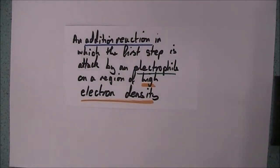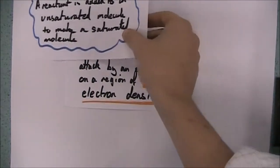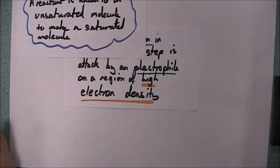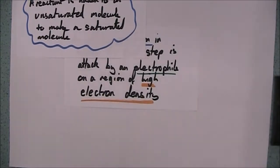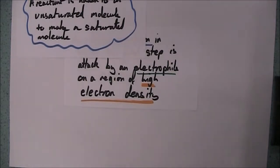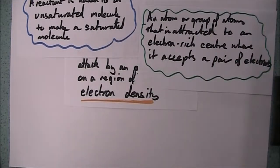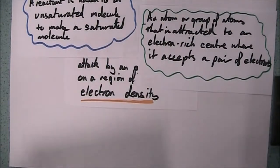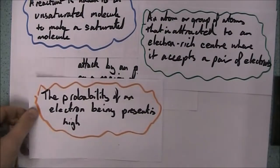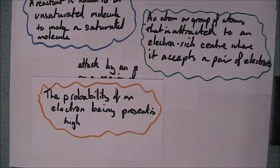Well, an addition reaction is when we have a reactant added to an unsaturated molecule to make a saturated molecule. So essentially we're removing a double bond there and replacing it with just a single bond between the carbon atoms. An electrophile is an atom or a group of atoms that are attracted to an electron-rich center where they accept a pair of electrons, and electron density is an area where the probability of there being an electron is high.